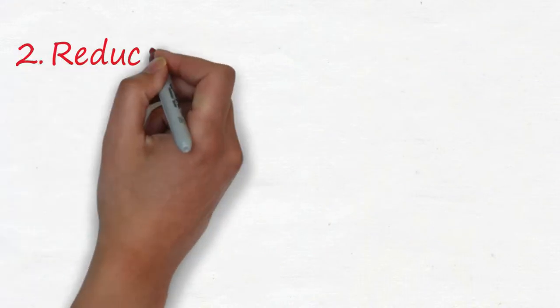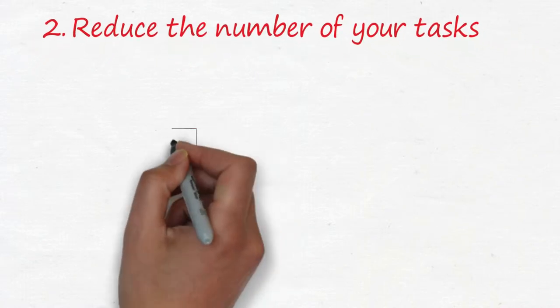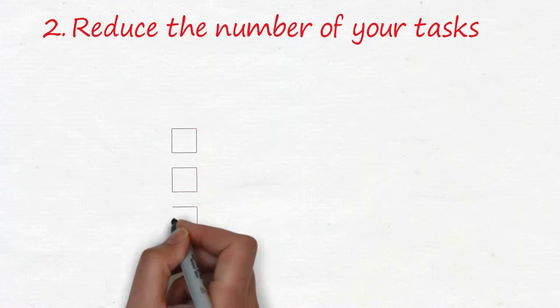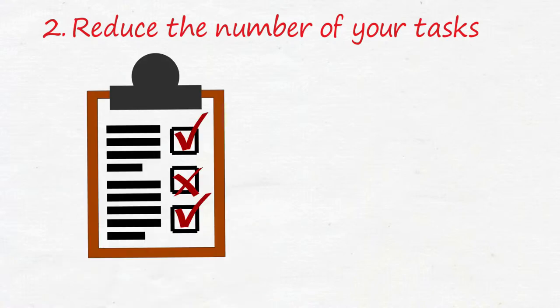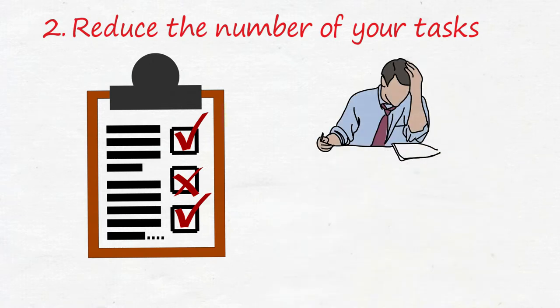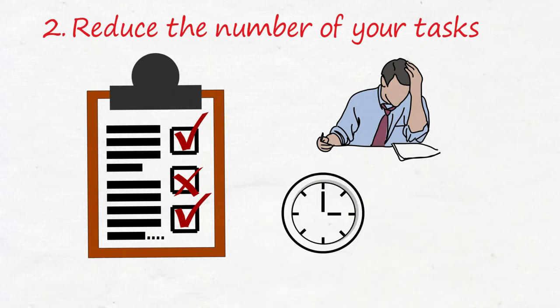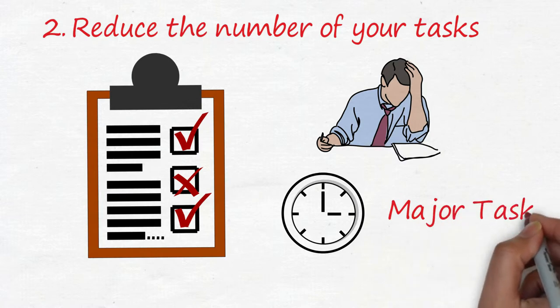Number two, reduce the number of your tasks. You may have an experience like this. When you are writing your to-do list, you brainstorm the activities you need to do and write them down. You then discover that your list is very, very long. With this long list, you are afraid that you cannot finish them on the next day. You are in a rush to finish the tasks. However, you may not have a good result from it, because you may spend less time on your major task so that you can finish the list. This is what busy people do.